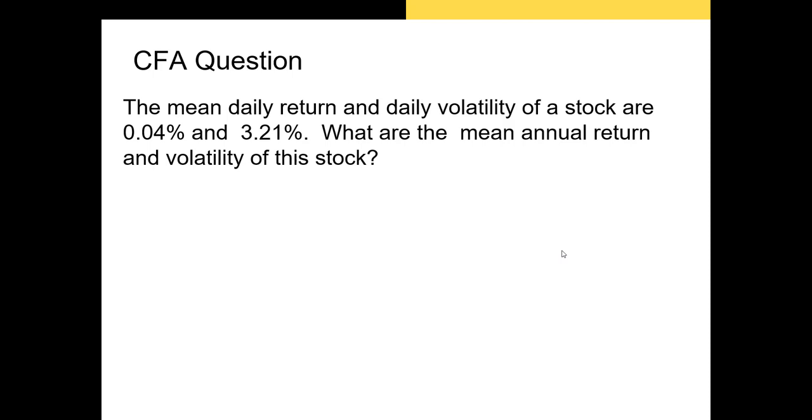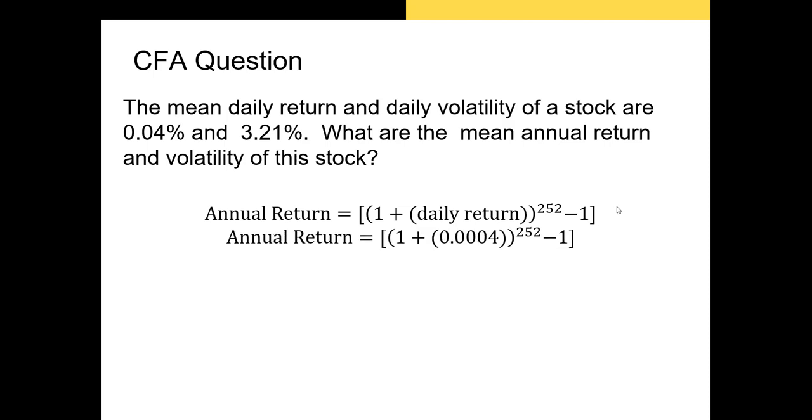Let's go through a CFA question. The mean daily return and daily volatility of a stock are four basis points and 3.21%. What are the mean annual return and volatility of this stock? First off, let's get our annual return. We're just going to take our daily return of four basis points and plug that in here. So four basis points is four hundredths of a percent, and we should get that our annual return is 10.6%. Very simple.